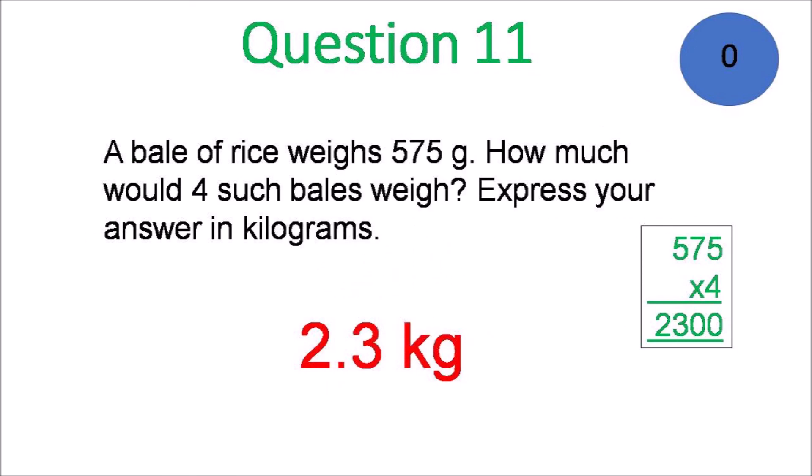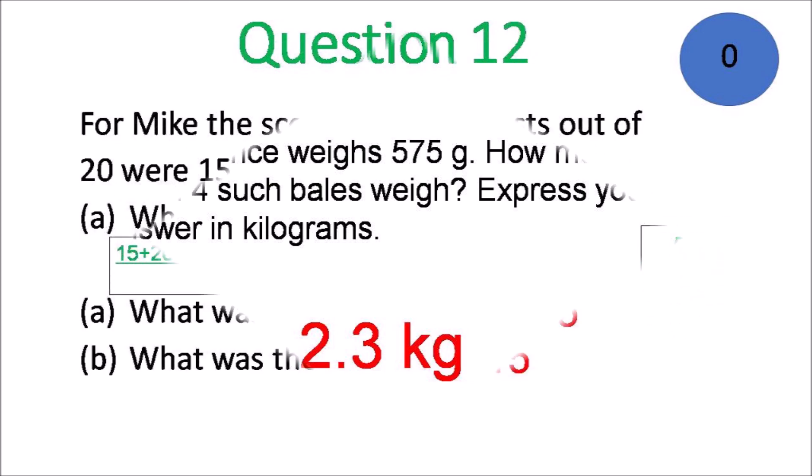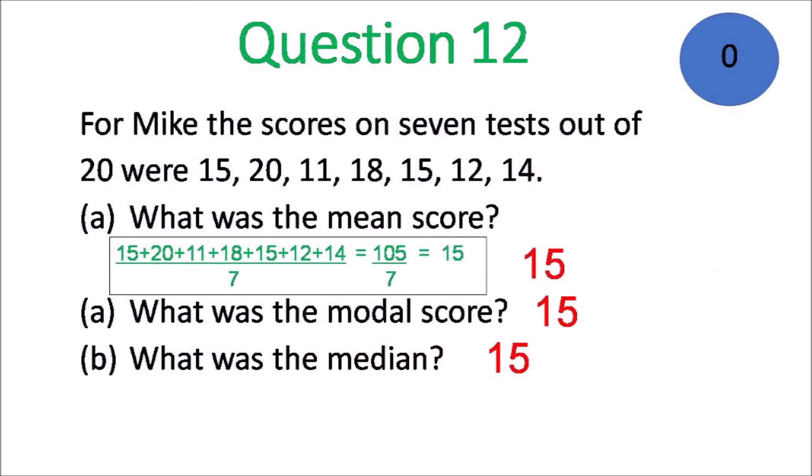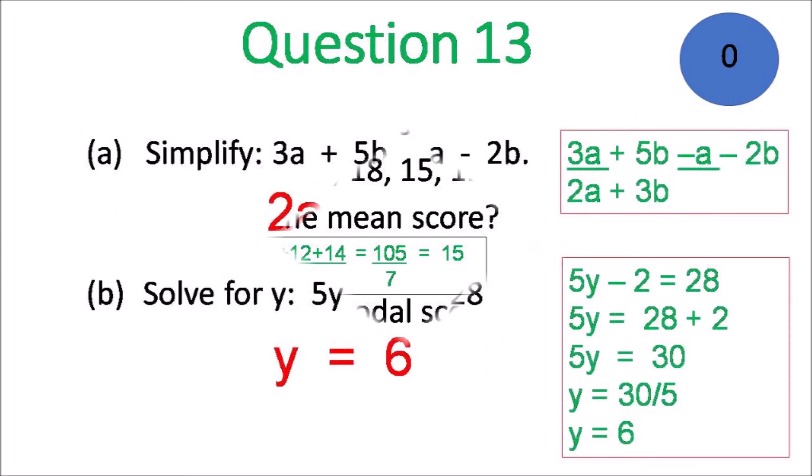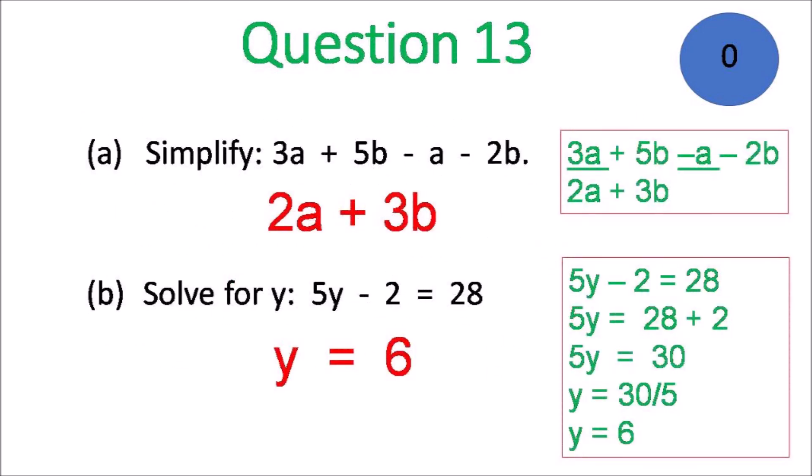When you multiply by four you get 2,300 grams, which is 2.3 kilograms. And Question 12: for the mean, add them up and divide by seven — 105 divided by 15. The modal score is 15, and the median is also 15 when you arrange them in order and pick the middle number.